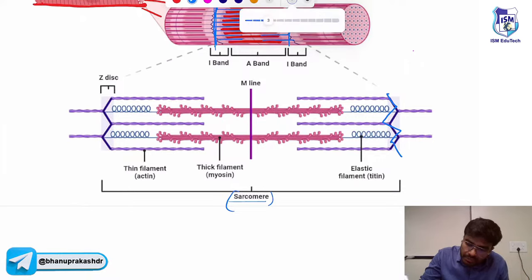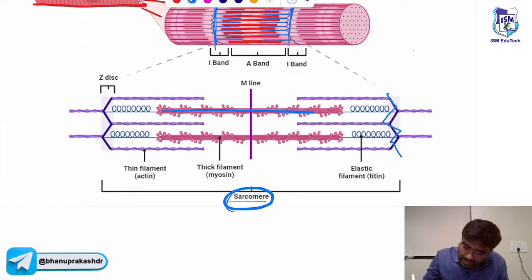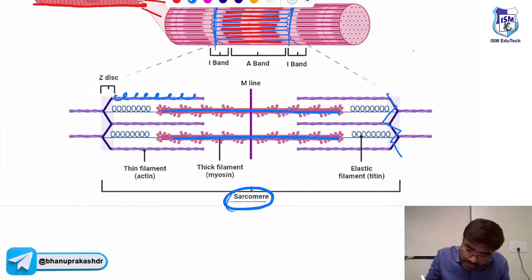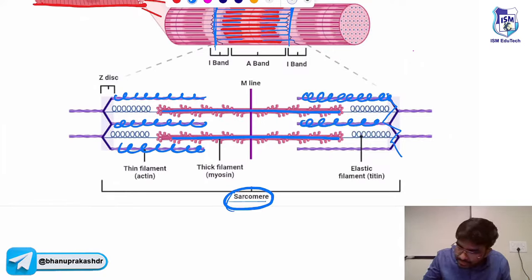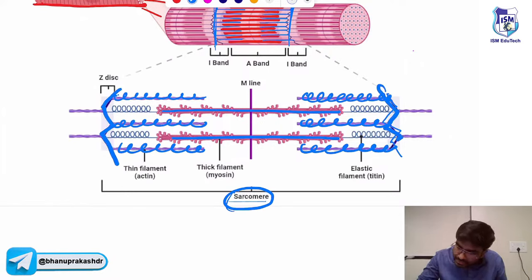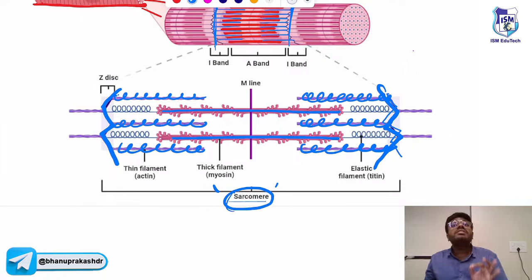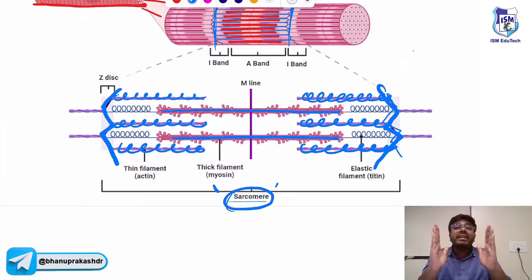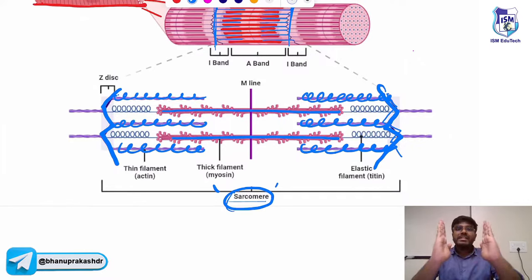What exactly is this sarcomere? The sarcomere consists of myosin molecules in the middle and actin molecules on both sides. This line is called the Z line, and the unit between the two Z lines is called a sarcomere — the functional unit of a muscle. The edges are the Z lines. In the center of the sarcomere, there is an M line; on the peripheries, there are Z lines.